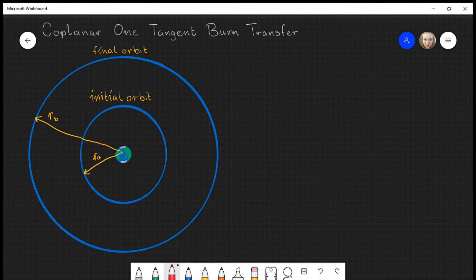Just like we did in the Holman transfer video, I'm going to label two points: point A and point B. These points are where the two burns occur. Between point A and point B we have a transfer ellipse. It's along this ellipse that the aircraft or satellite goes from point A to point B.